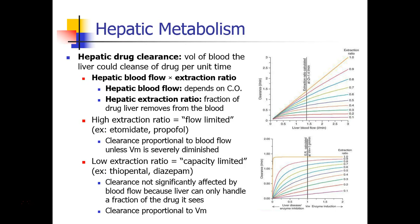Hepatic drug clearance is simply the product of hepatic blood flow and the extraction ratio. Hepatic blood flow is straightforward: as your cardiac output increases, you send more blood per unit time to the liver. Obviously, if you don't send blood to the liver, you can't metabolize drugs there. So, at least to some degree, increased hepatic blood flow ought to increase metabolism.